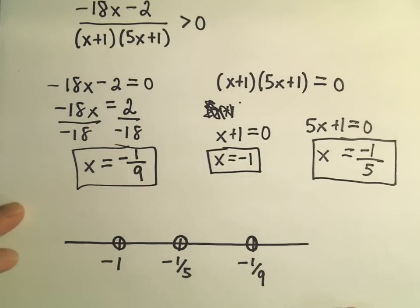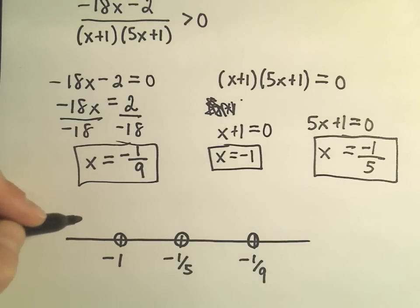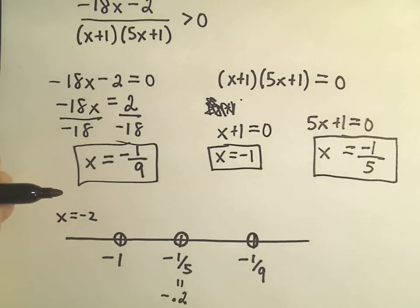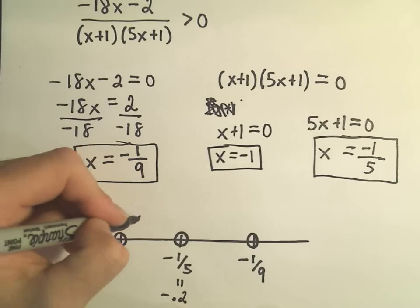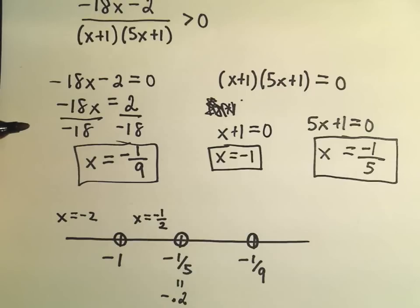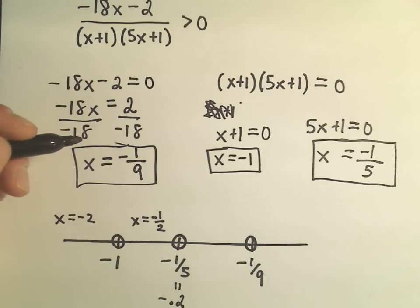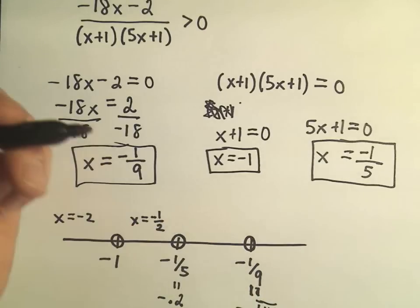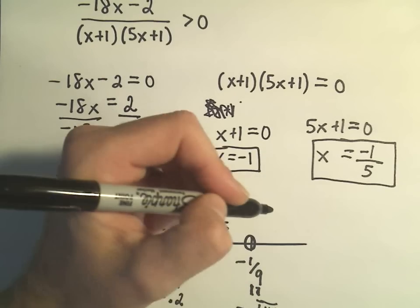Let's come up with test values. We have x equals negative 1, so we need something smaller — maybe x equals negative 2. Negative 1 fifth is really the number negative 0.2 as a decimal. We need something between negative 1 and negative 0.2, so maybe I'll use negative 1 half, or equivalently negative 0.5. And for a number between negative 1 fifth and negative 1 ninth, since negative 1 ninth equals negative 0.1 repeating, maybe we can use negative 0.15. And then anything bigger than negative 1 ninth — let's use x equals 0.